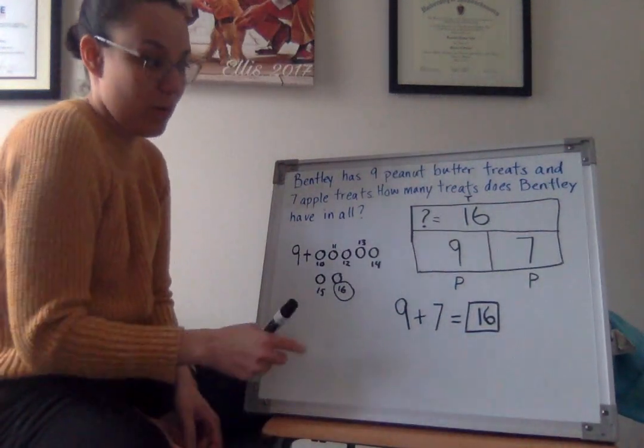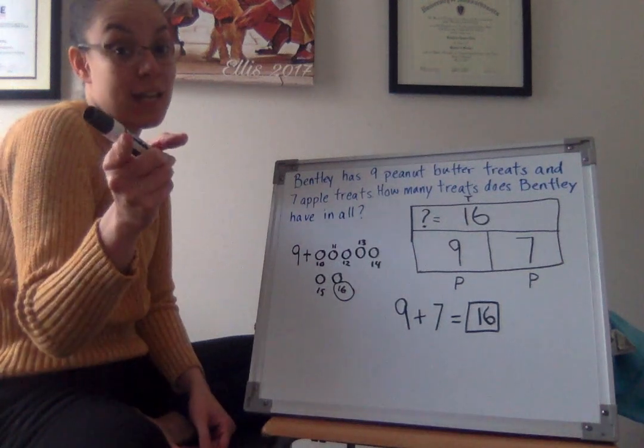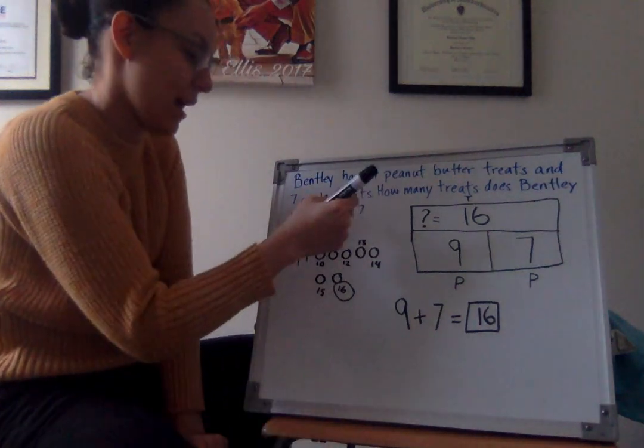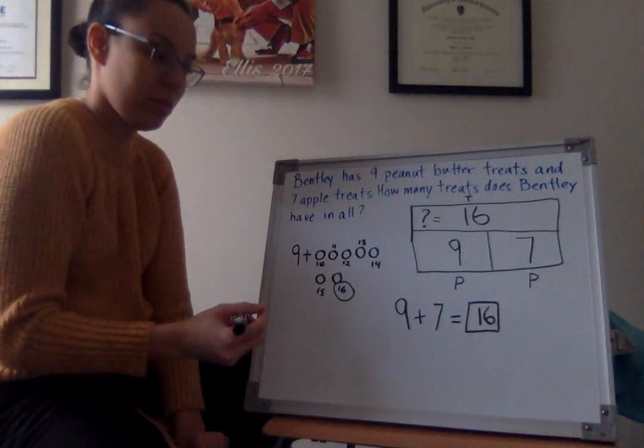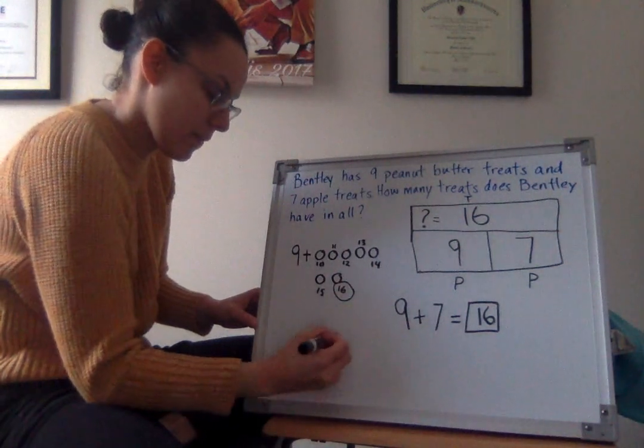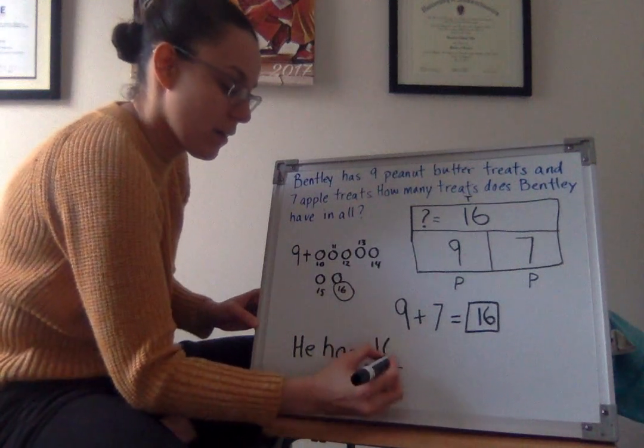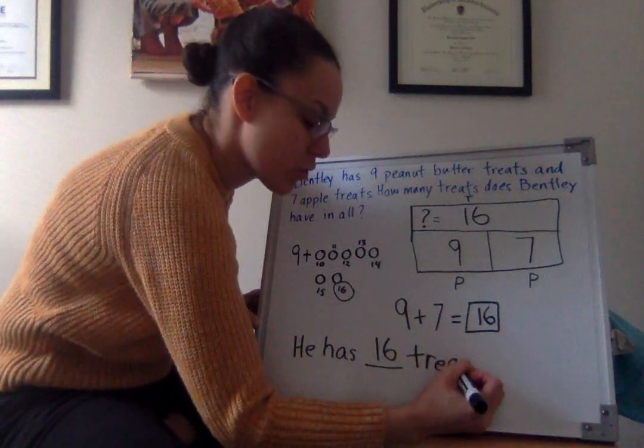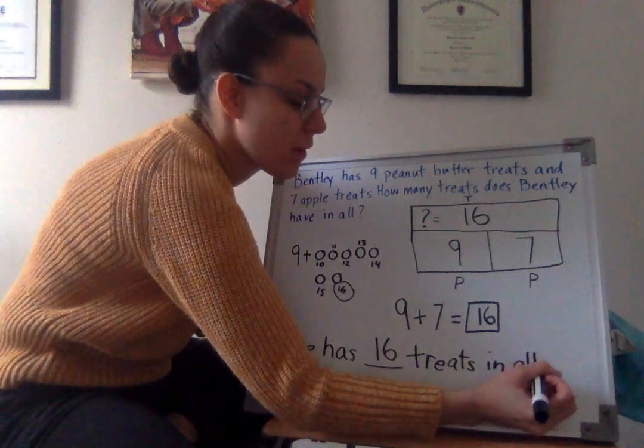Perfect. Now, what are we missing? If you said an answer sentence, you're right. Let me reread the question so I make sure that my answer sentence matches and answers the question. How many treats does Bentley have in all? So I can say he has 16 treats in all.